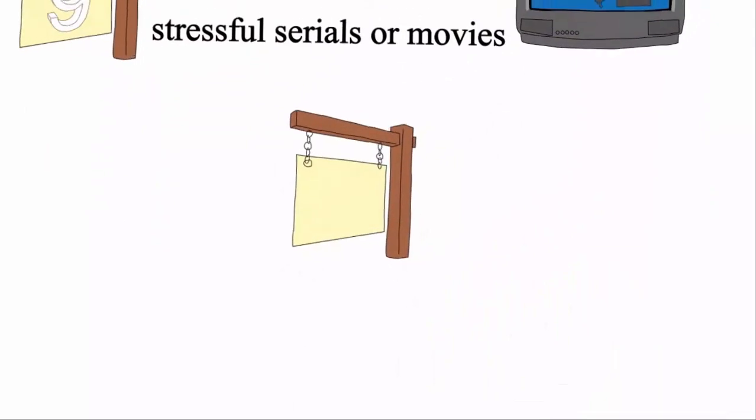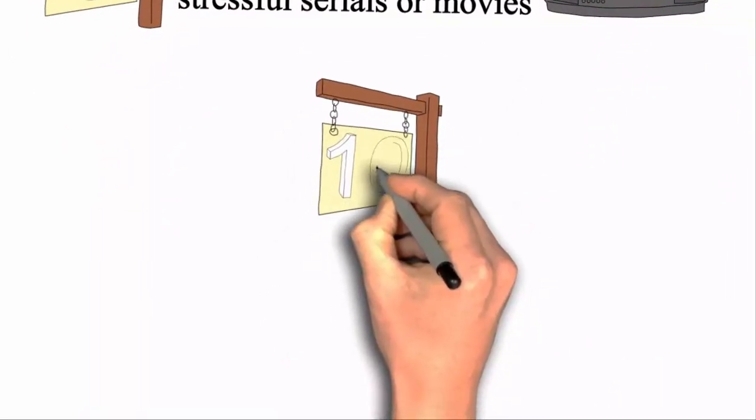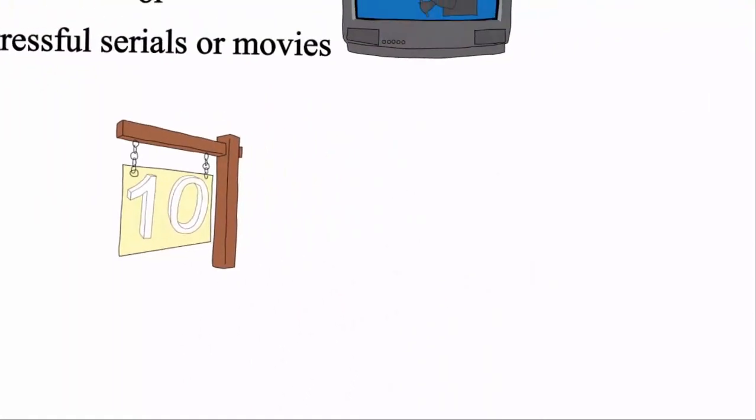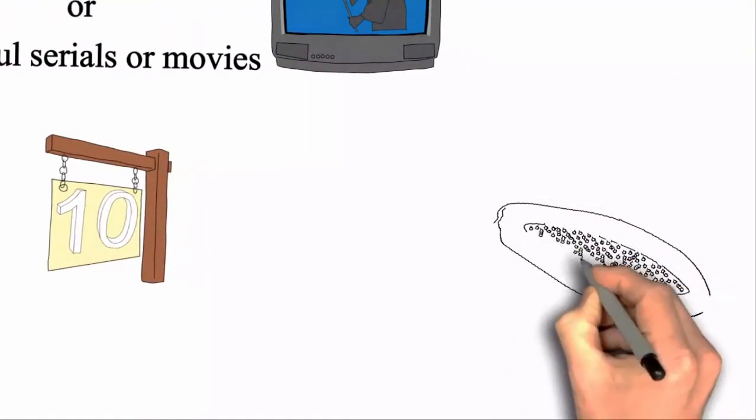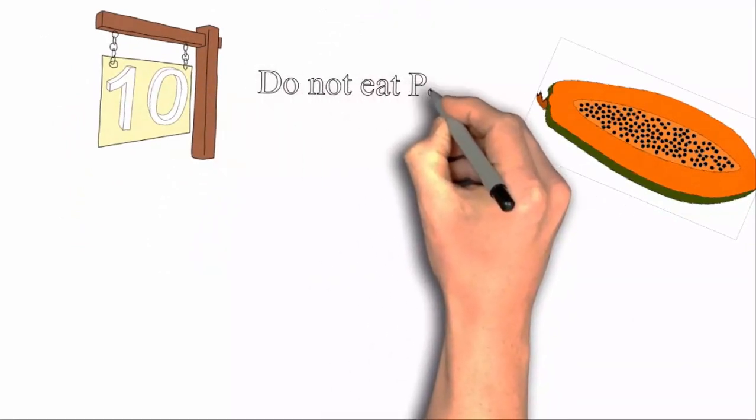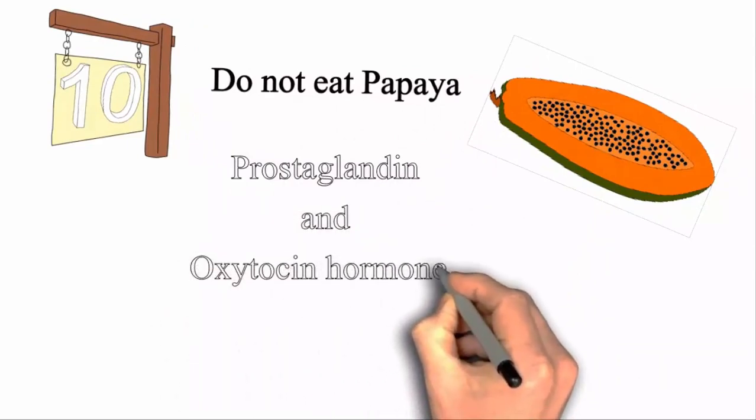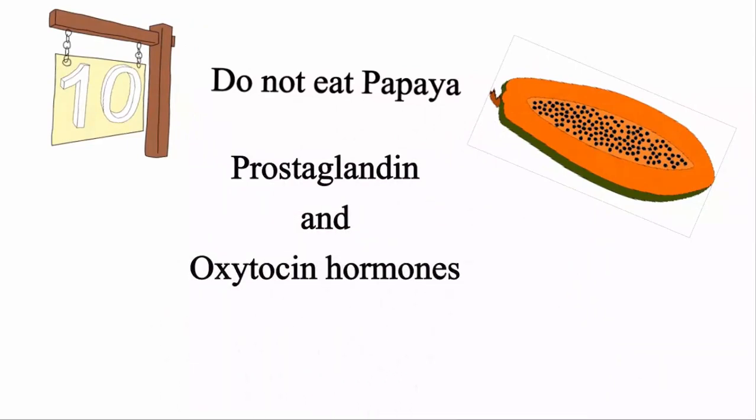The tenth one is regarding papaya. There is one idea that we should not eat papaya during pregnancy, and that is because there are two hormones in the body: prostaglandin and oxytocin. Once these hormones increase and they are in an excited stage, they lead to miscarriage.